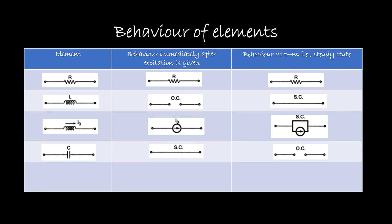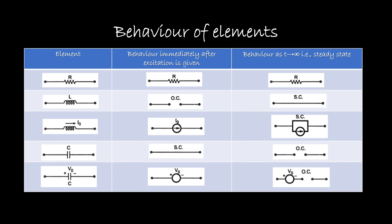When the initial voltage in the capacitor is zero, the behavior can be observed on the screen. But when the capacitor is having some internal voltage V₀, then the behavior immediately after the excitation is that the same initial voltage will be exhibited, because it does not allow sudden changes — it already has some internal voltage and that same internal voltage will appear. For an infinite period of time, it will be replaced by an open circuit with the internal voltage. This table is very important to understand and will help throughout transient analysis.